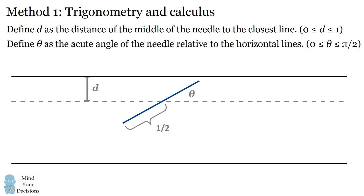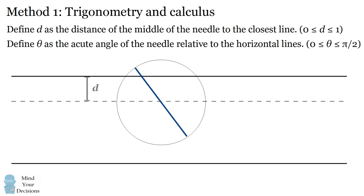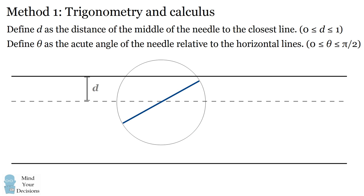For a given distance of the midpoint to the horizontal line, when will the needle intersect one of the horizontal lines? It depends on the angle the needle makes. For a given distance d, you can think about the locus of points the needle could spin around. Some of these positions will result in the needle intersecting the horizontal line, and some will not.